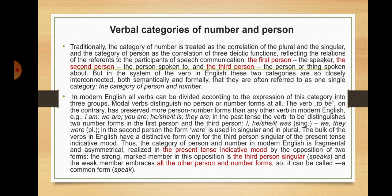In modern English, all verbs can be divided according to the expression of this category into three groups. Modal verbs distinguish no person or number forms at all. The verb 'to be' has preserved more person-number forms than any other verb in modern English. The bulk of verbs have a distinctive form only for the third person singular of the present tense indicative mood. Thus, the category of person and number in modern English is fragmental and asymmetrical, realized in the present tense indicative mood by the opposition of two forms: the strong marked member is the third person singular — 'he speaks' — and the weak member embraces all the other person and number forms, a common form, for example, 'speak.'